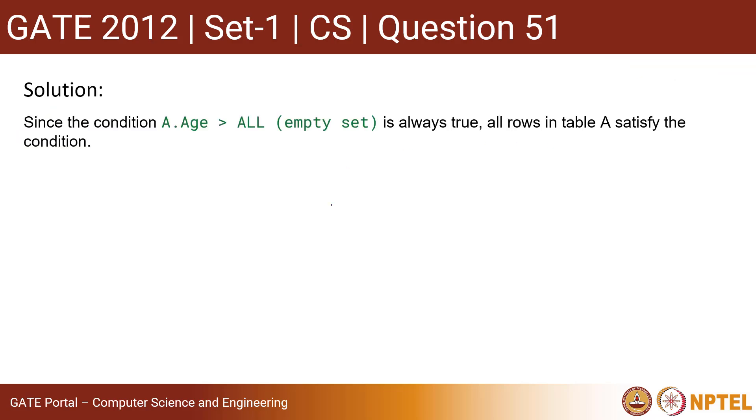Since the condition A.Age greater than ALL empty is always true, all rows in table A satisfy the condition. Thus the query returns ID values of all the rows of table A. This will be the result. The result contains three tuples.